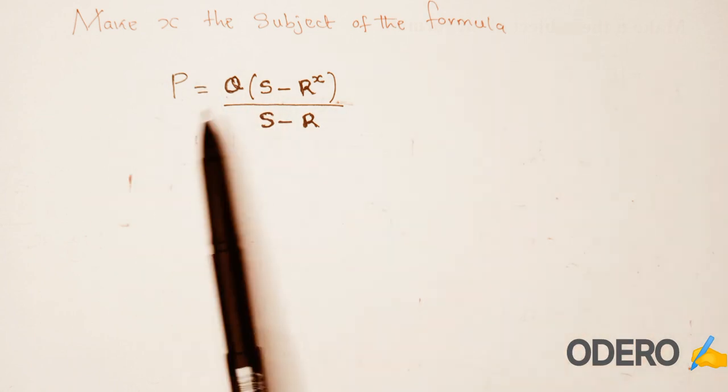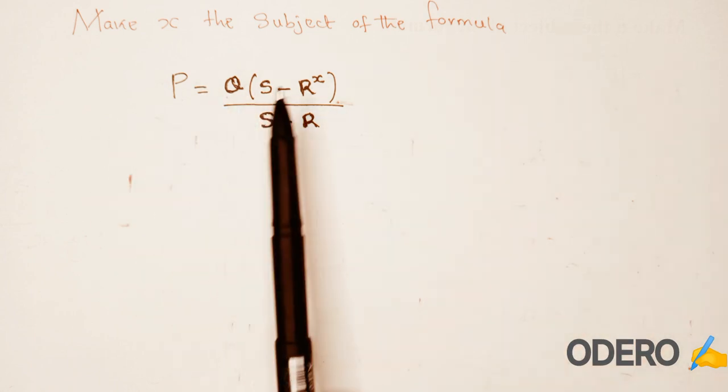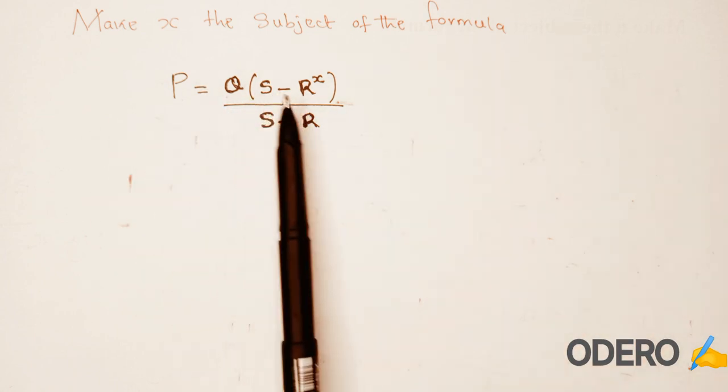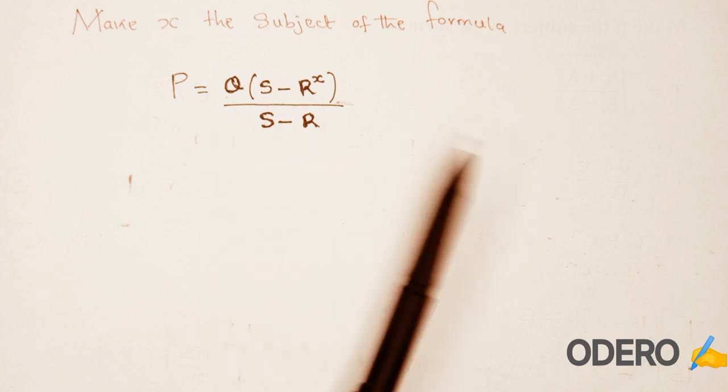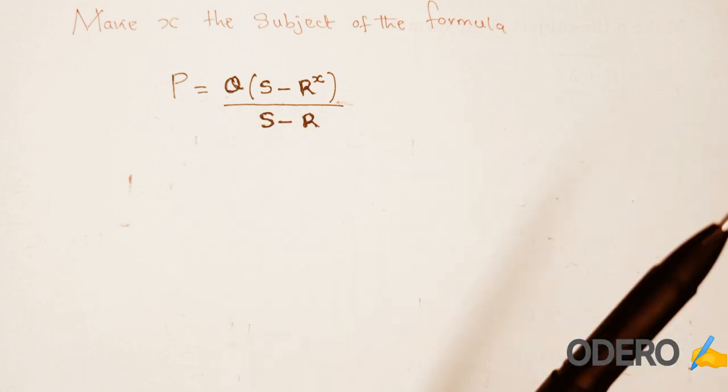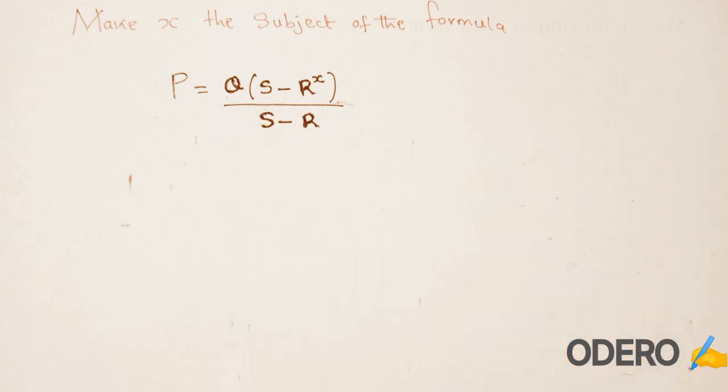This one — make x the subject of the formula: b is equal to q into s minus r raised to x over s minus r. Thank you.